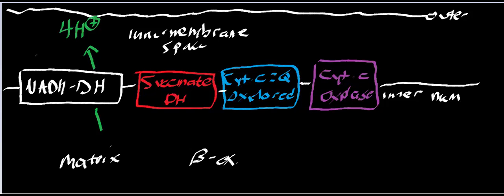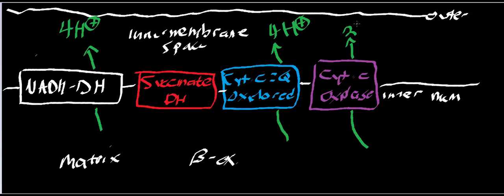The complexes that pump protons all pump them in the same direction — it's a vectorial pumping of protons going into the inner membrane space. If we look at succinate dehydrogenase, it does not pump protons. Complex three also pumps four protons. And cytochrome C oxidase pumps two protons.